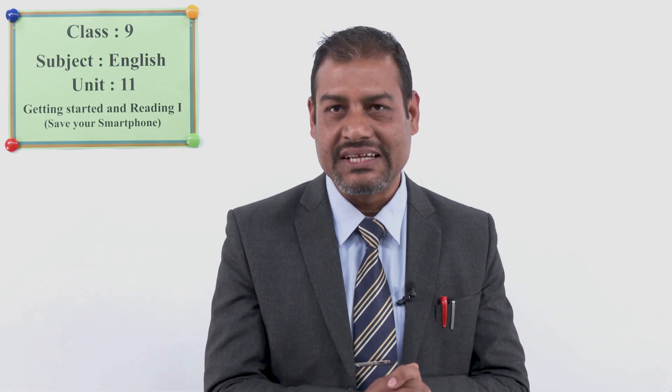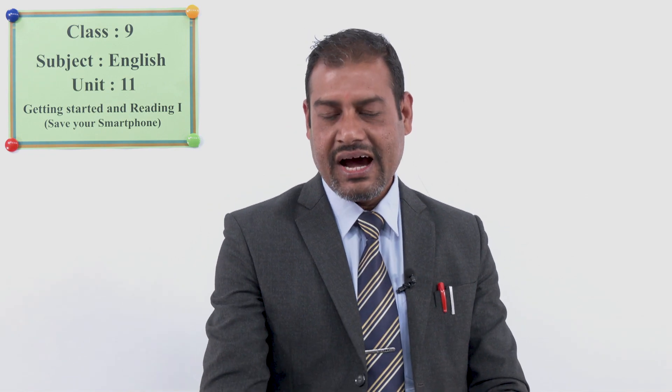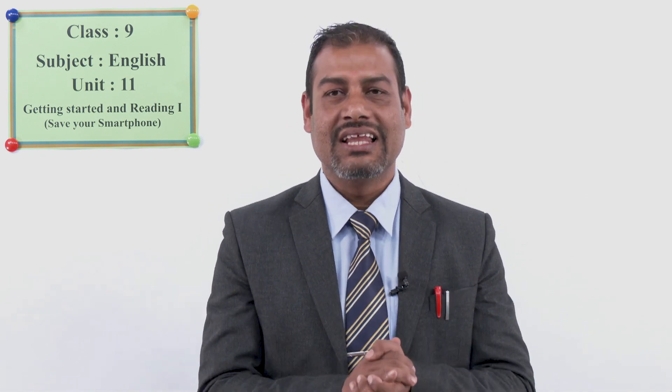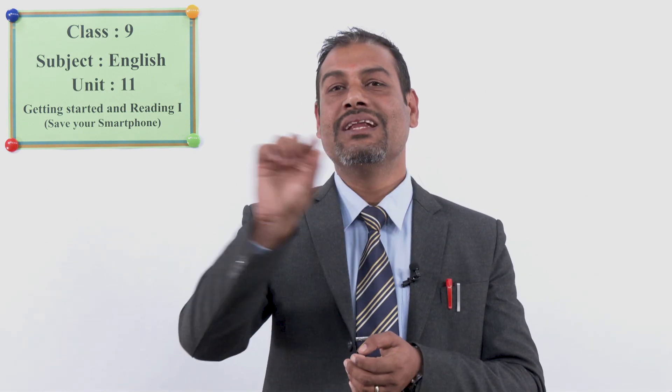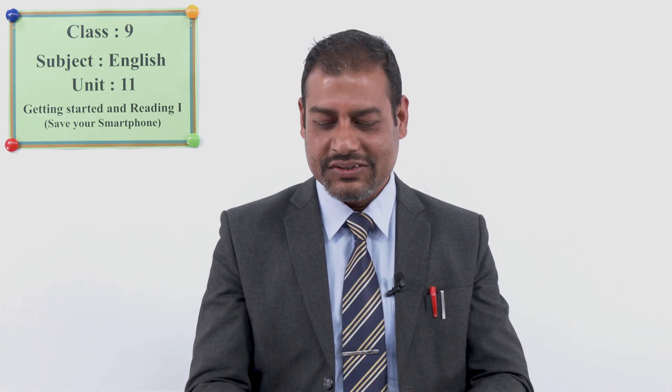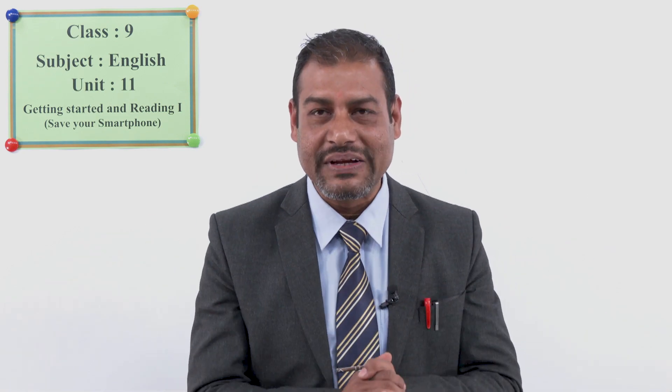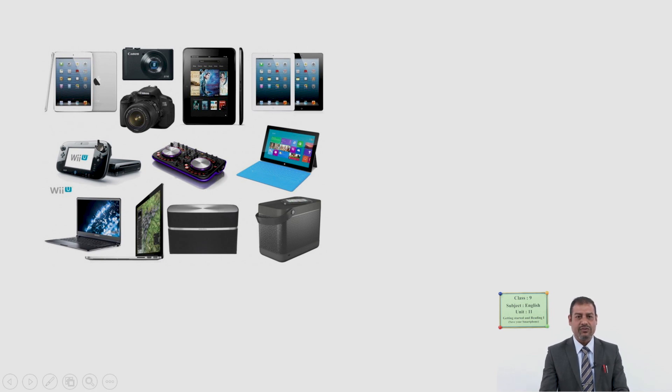Can you tell me which unit this is? All right, we are going to start Unit 11. So all of you turn to the correct page. Are you ready? Good. Now what do you see there in Unit 11? Can you tell me the title of the unit? You can see mobile, camera, laptop, and many more. So what are these things called? They are gadgets.